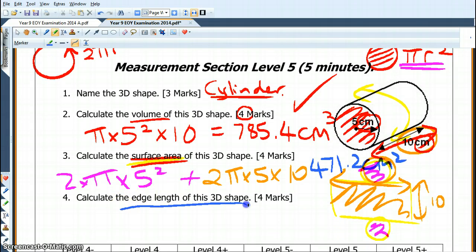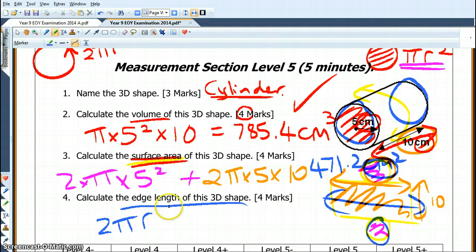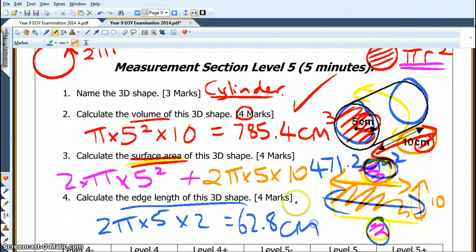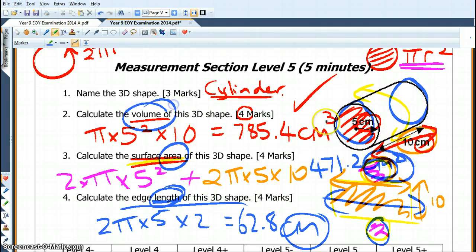Now calculate the edge length of this 3D shape. Here's the edge, here's an edge, but there's actually no edges here, is it? It just goes around in a circle. So I've got my edge was 2 pi r, which was, my radius was 5, but I need that twice. So that's going to equal 2 times pi times my radius times 2, and I get 62.8, and that's going to be centimetres, because it's a length is in centimetres, area is in centimetres squared, and volume is in centimetres cubed. So if you want full marks, you need to get that right.